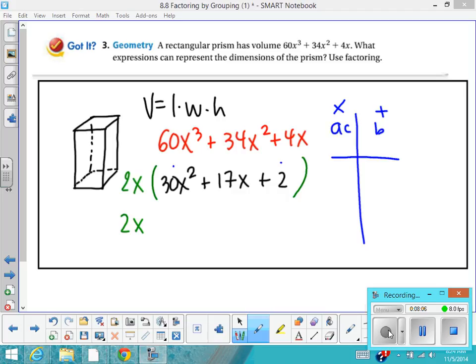In our case, the a times c is 60, and our b term is 17. So you're trying to think of numbers that multiply to 60 and add to 17. I made a list of the factors of 60, and I finally hit on the one that adds to 17. And so here's what you're going to do.